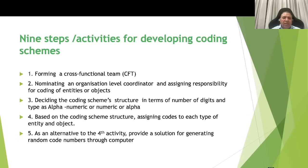Suggested 9 steps and activities for developing the coding schemes. Step 1: Forming a cross-functional team, called CFT. Step 2: Nominating an organizational level coordinator and assigning responsibility for coding of entities or objects. This coordinator may also be referred to as the agency.